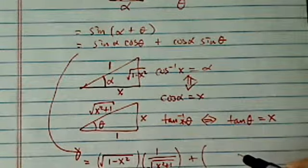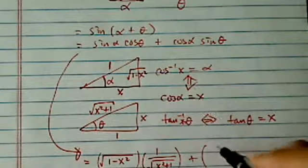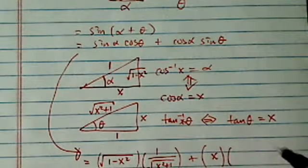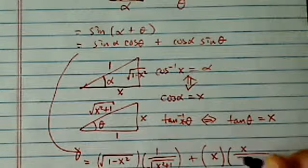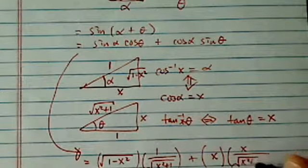Plus cosine of alpha, which is x, times sine of theta. Sine of theta is x over radical of x squared plus 1.